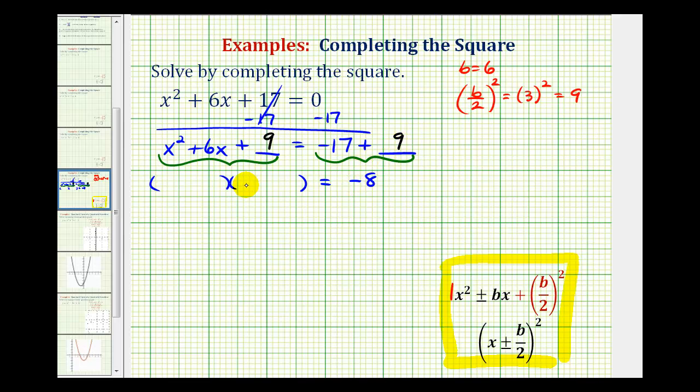And now the first terms of the binomial factors will be the factors of x squared, which are x and x. And now we want the factors of positive 9 that have a sum of positive 6, which would be 3 and 3.